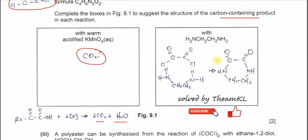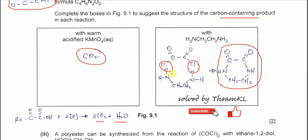For the second reaction, ethanedioyl dichloride reacts with a diamine to give a cyclic product with molecular formula C₄H₆N₂O₂. Since the compound has two acyl chloride groups and the diamine has two amine groups, amines react with acyl chlorides to form amides. The acyl chloride and diamine are positioned so that condensation occurs — HCl is removed and two C-N bonds form, producing the cyclic amide structure.